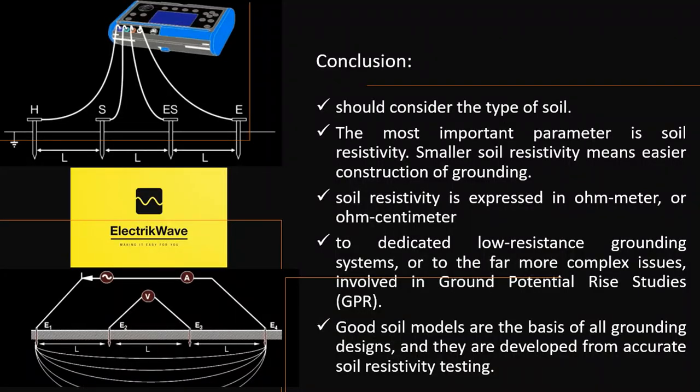Conclusion: Designing earth ground systems should consider the type of soil. The most important parameter is soil resistivity. Smaller soil resistivity means easier construction of grounding which fulfills the requirements. Soil resistivity testing is the process of measuring a volume of soil to determine the conductivity of the soil. The resulting soil resistivity is expressed in ohm-meter or ohm-centimeter. Soil resistivity testing is the single most critical factor in electrical grounding design — true when discussing simple electrical design, dedicated low resistance grounding systems, or the far more complex issues involved in ground potential rise (GPR) studies. Good soil models are the basis of all grounding designs and they are developed from accurate soil resistivity testing.